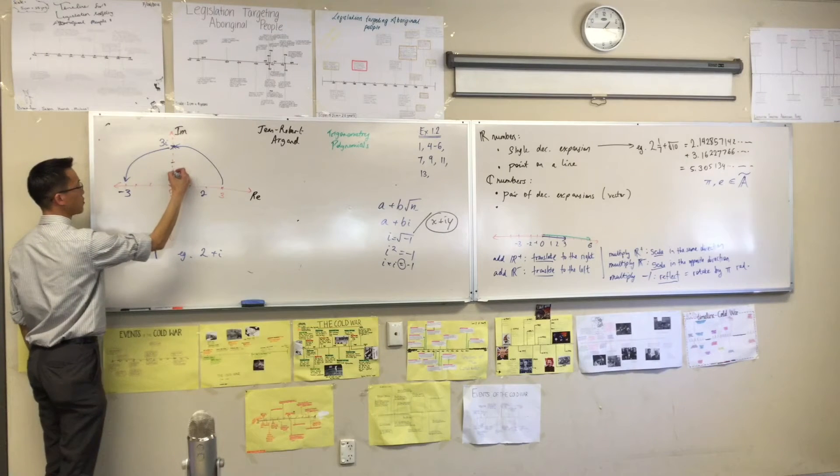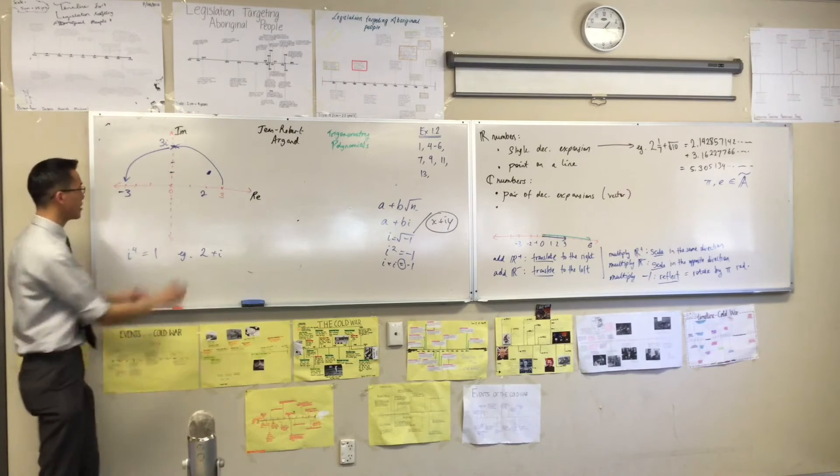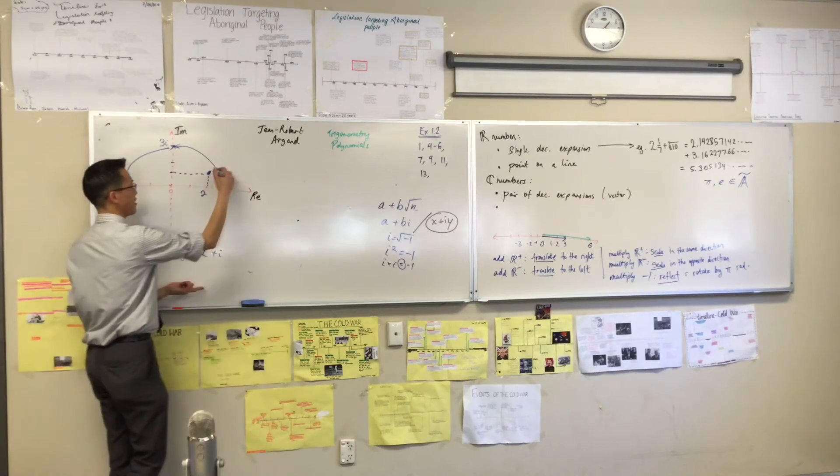That's 3i, so 2, 3, there we go. So that guy there, that point, is 2 plus i. That guy there.